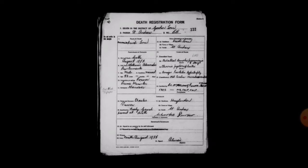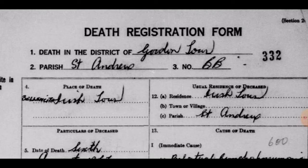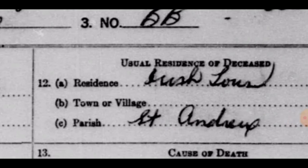We'll start on the death registration form by looking at the top of the form. At the top, it says: Death Registration Form. Death in the district of Gardentown, parish of St. Anjou. If you look at the side here, it's the place of death. We already mentioned the usual residence of the deceased — same place, Gardentown, St. Anjou.